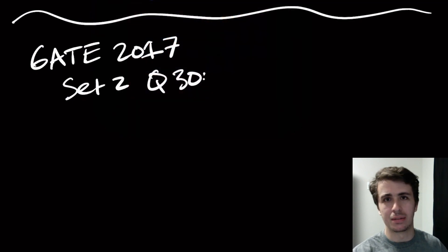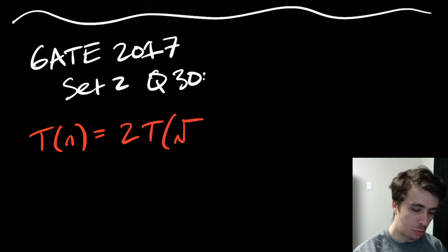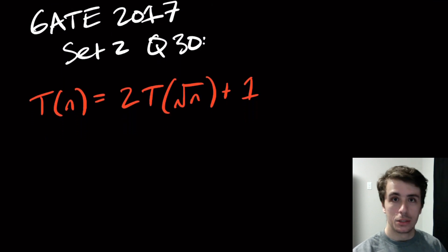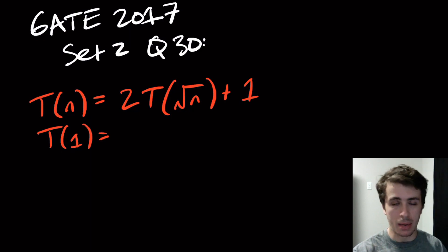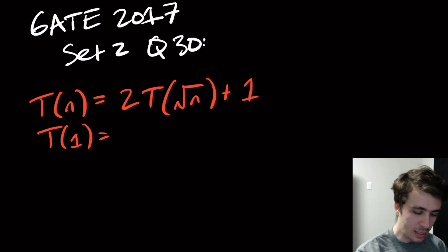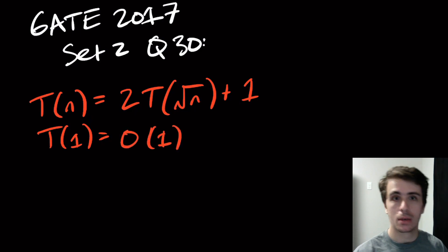We have a recurrence function T(n) = 2T(√n) + 1. T(1), the bottom case, so at the bottom of the recursion tree we can assume that is big O(1). Well we don't actually really care about that, that's not as important.